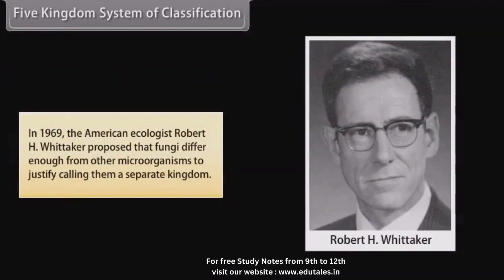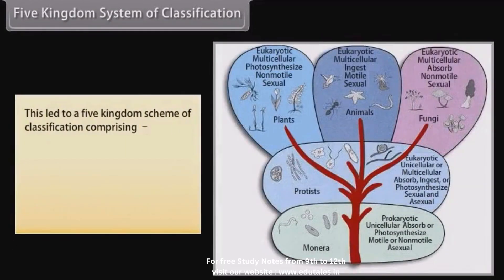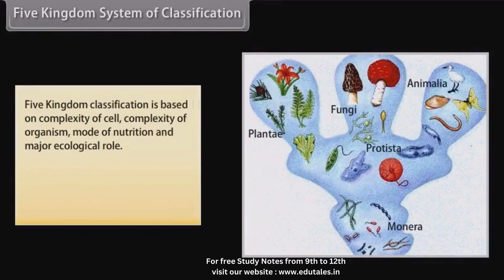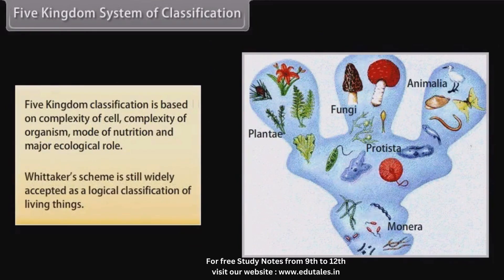In the 5 Kingdom System of Classification, in 1969 the American ecologist Robert H. Whittaker proposed that fungi differ enough from other microorganisms to justify calling them a separate kingdom. This led to a five kingdom scheme comprising Monera, Protista, Fungi, Plantae, and Animalia. Five Kingdom Classification is based on complexity of cell, complexity of organism, mode of nutrition, and major ecological role. Whittaker's scheme is still widely accepted as a logical classification of living things.